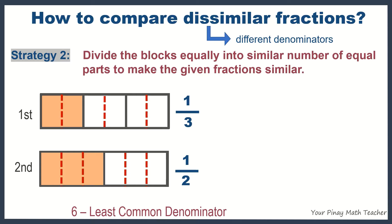six is called the least common denominator. And one-third can be renamed as two over six. Two over six is equivalent to one-third. And one-half can be renamed as three-sixths, which is equivalent to one-half.